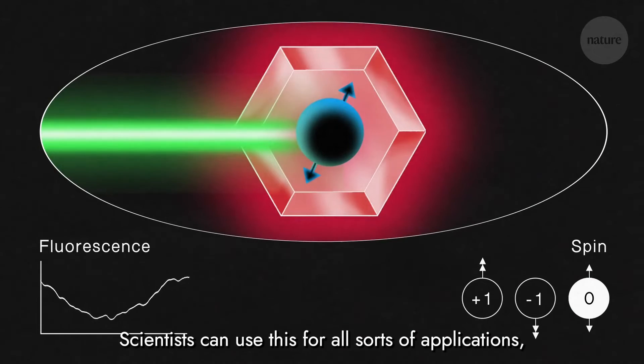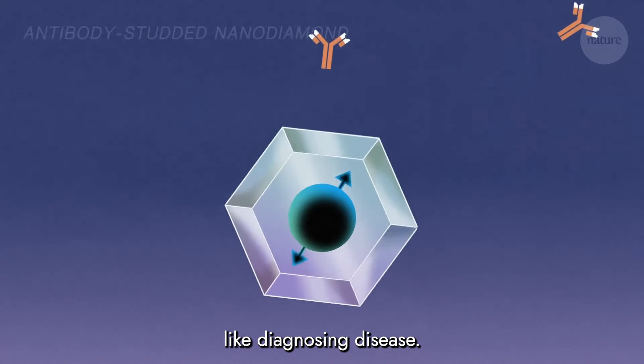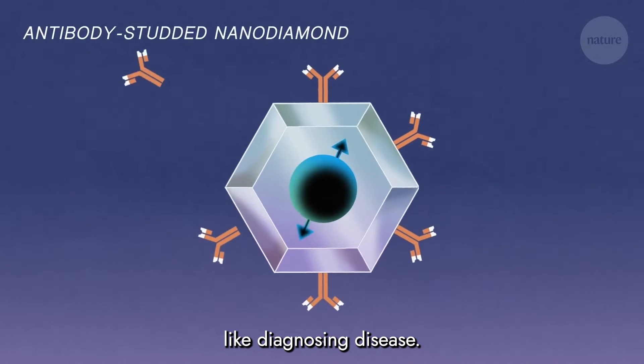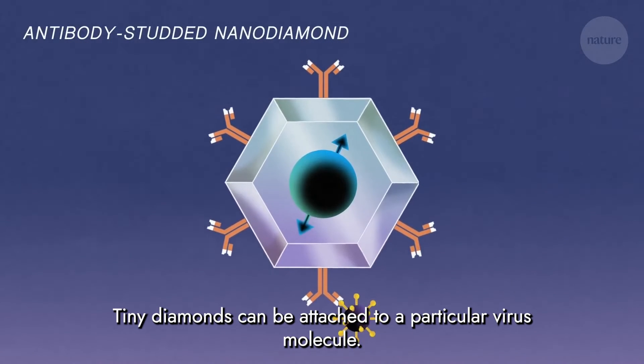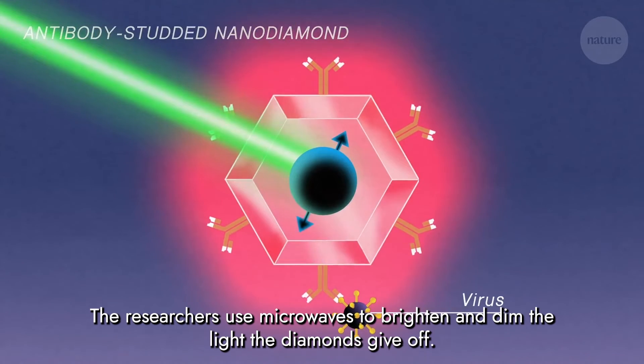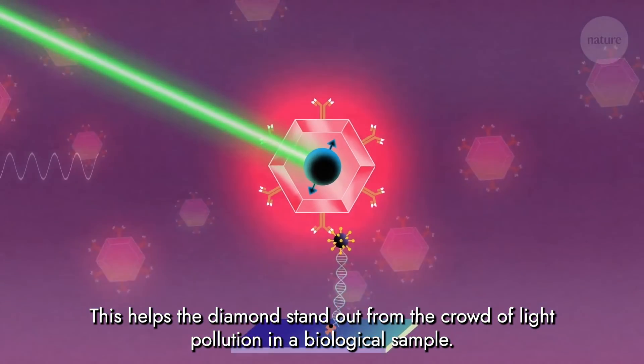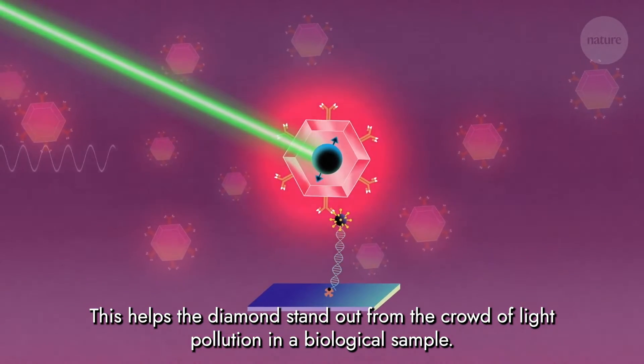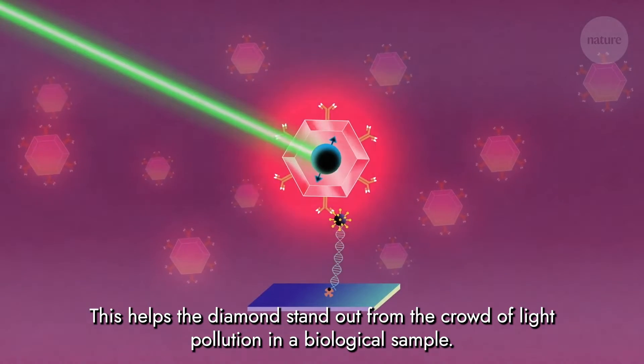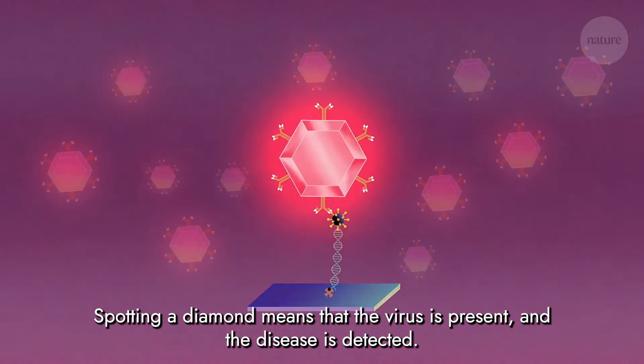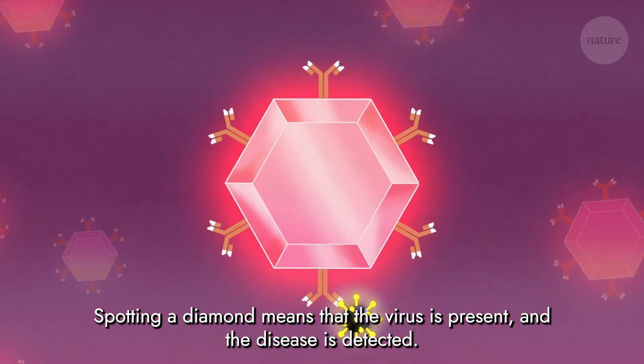Scientists can use this for all sorts of applications, like diagnosing disease. Tiny diamonds can be attached to a particular virus molecule. The researchers use microwaves to brighten and dim the light the diamonds give off. This helps the diamond stand out from the crowd of light pollution in a biological sample. Spotting a diamond means that the virus is present and the disease is detected.